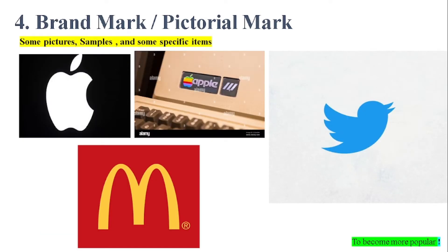The fourth type is the brand mark or pictorial mark logo, which uses pictures, symbols, and other specific items. Look here at the Apple logo — it is just a picture. Their previous logo had a picture and the text 'Apple,' but when it became more popular they removed the name and the picture alone represents the brand. Similarly, Twitter uses a bird as their brand logo. There are many other brand or pictorial mark logos as well.